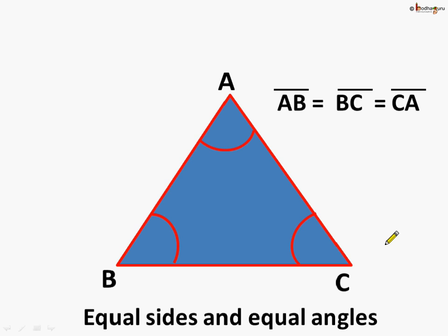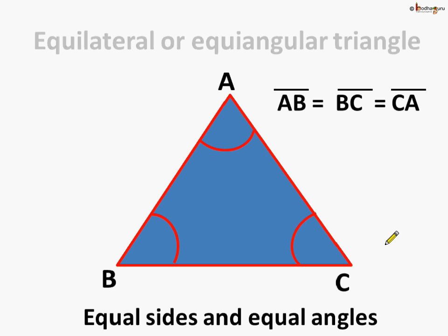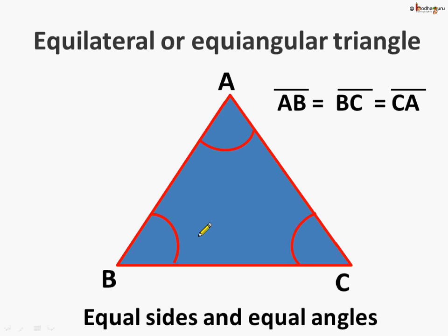Hence, it is also called an equiangular triangle. This is an equilateral triangle, meaning all the sides are equal and all the angles are equal.